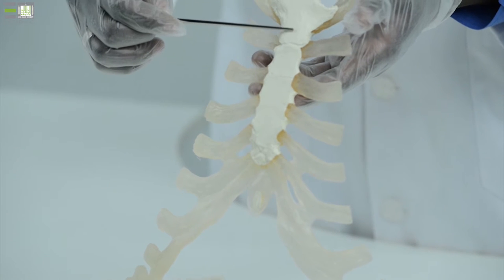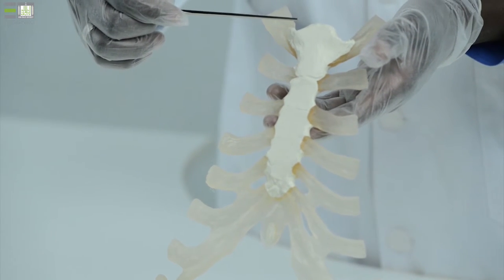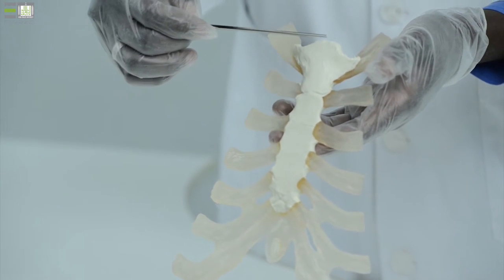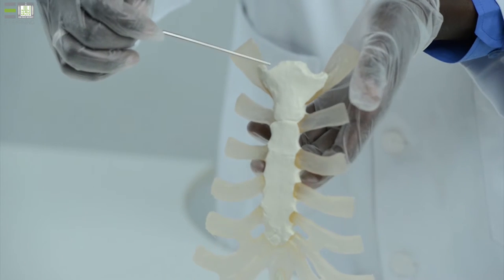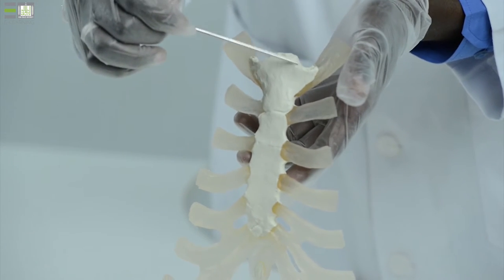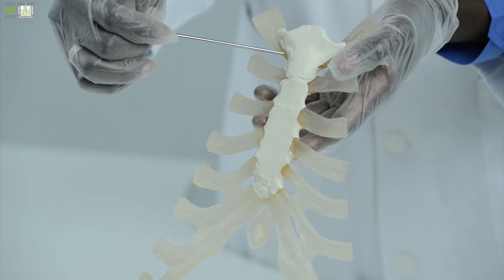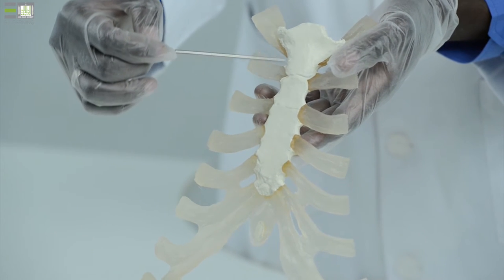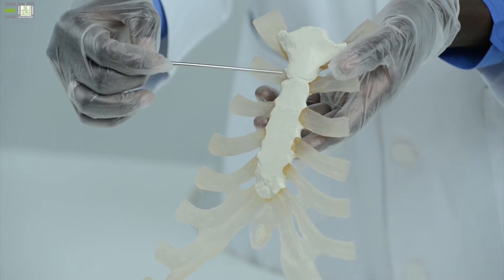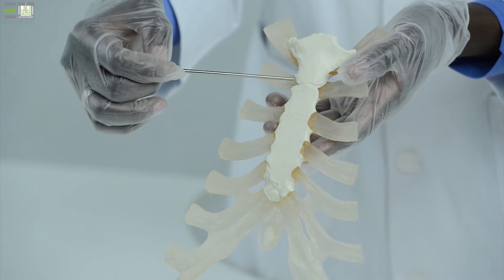In the manubrium, we can see facet for articulation with the clavicle on both sides. It is called clavicular facet. And laterally, on both sides, we have facets for articulation with the costal cartilages.